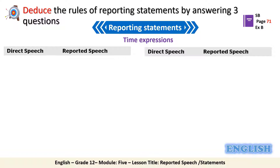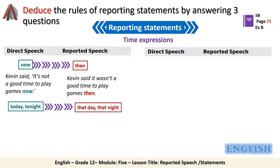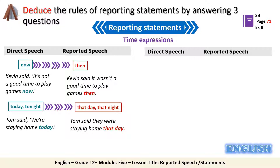Now let's have a look at how time expressions change when we report statements. Traditionally, time expressions appear at the end of the statement. The time expression 'now' changes into 'then' in reported speech — for example, 'Kevin said it's not a good time to play games now' becomes 'Kevin said it wasn't a good time to play games then.' Also, 'today' or 'tonight' should be written as 'that day' or 'that night' — for example, 'Tom said we're staying home today' becomes 'Tom said they were staying home that day.'